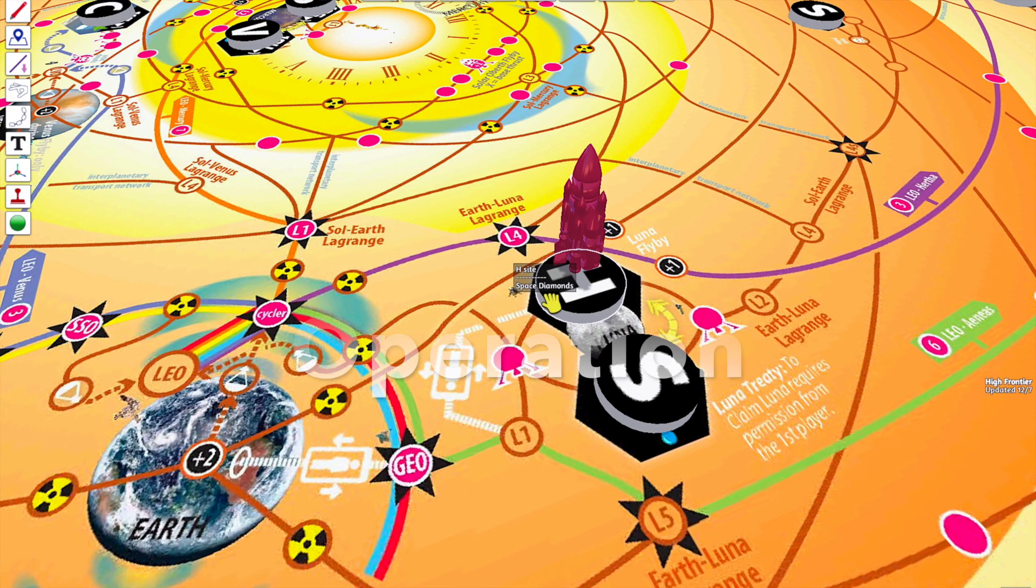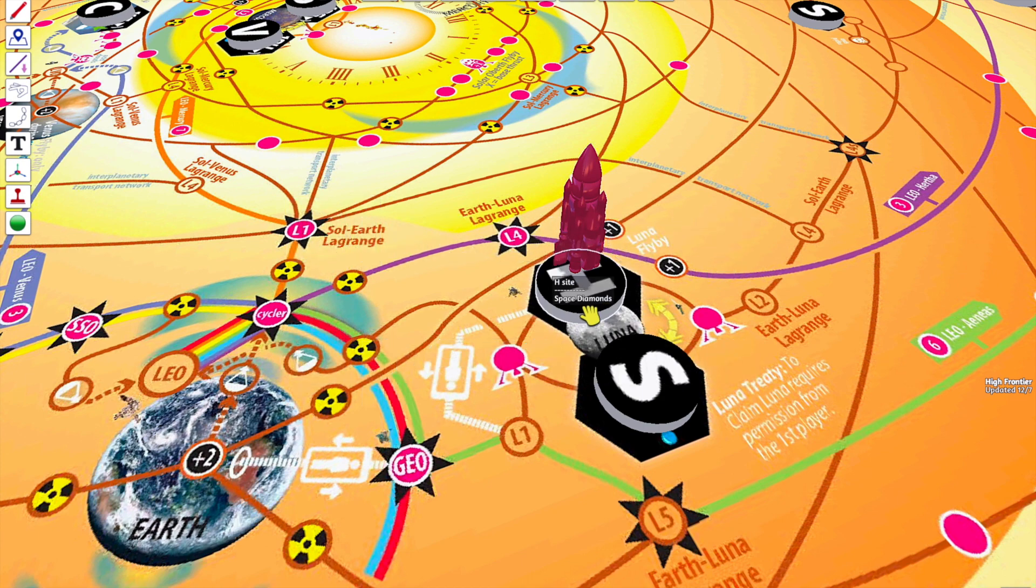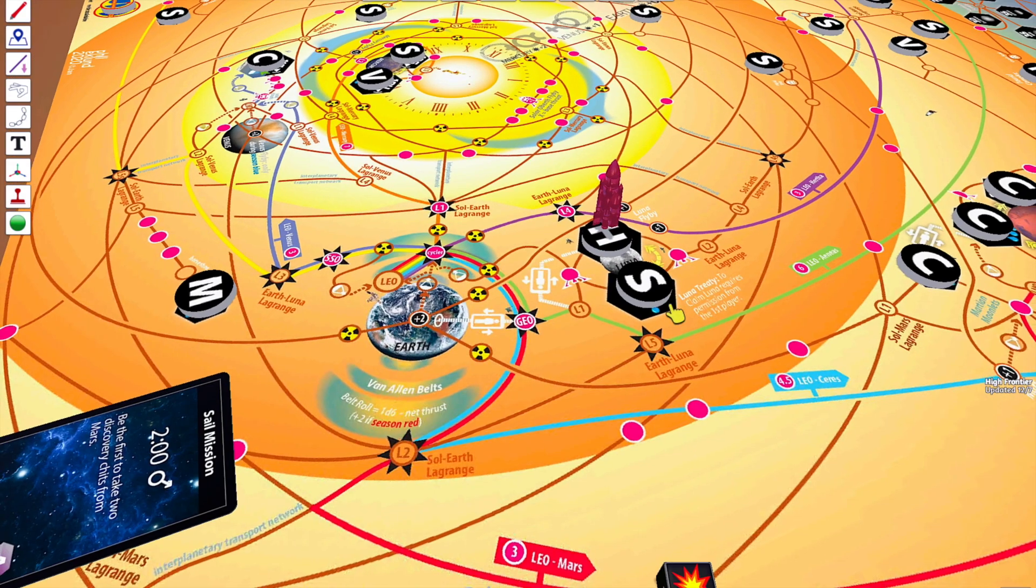Each turn, you get to perform one operation. The discovery operation lets you take a token from a site where your rocket is located, and add it to your rocket or goal face down in front of you. Each token is worth victory points.